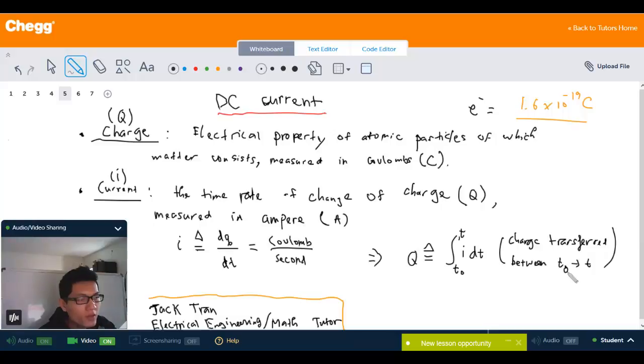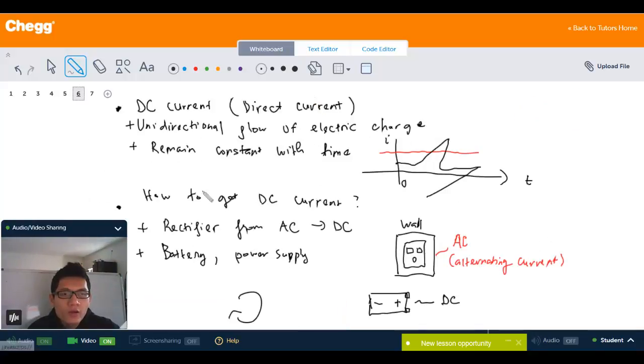From this definition you can also calculate the charge transfer between any given time interval from T naught to T by just taking the integral of the current with respect to the time. So now we know about the charge and current, we can define the DC current.